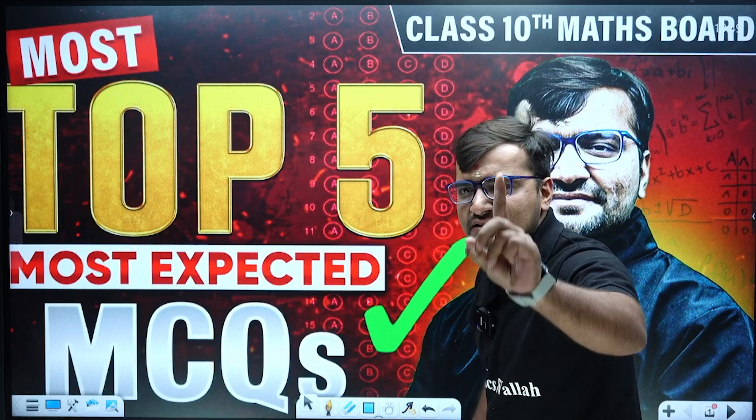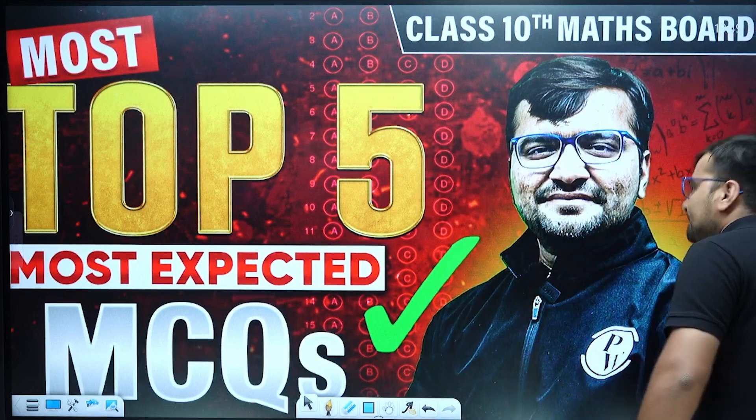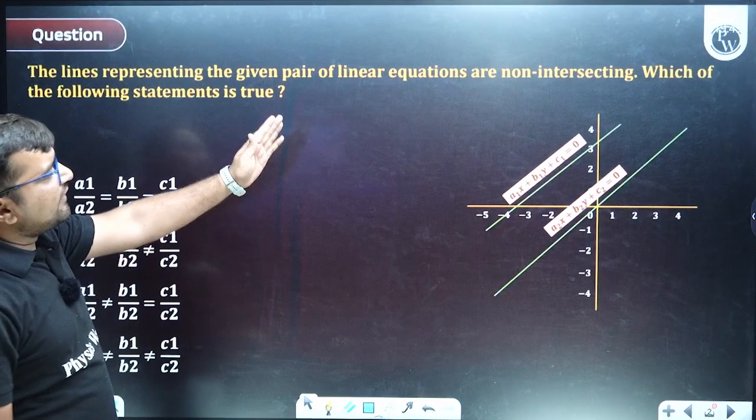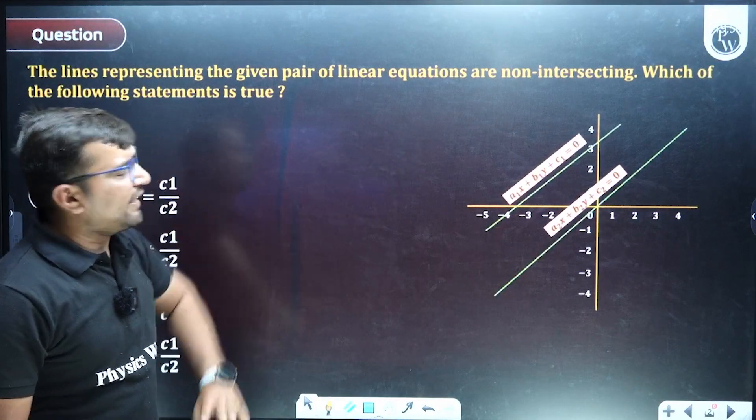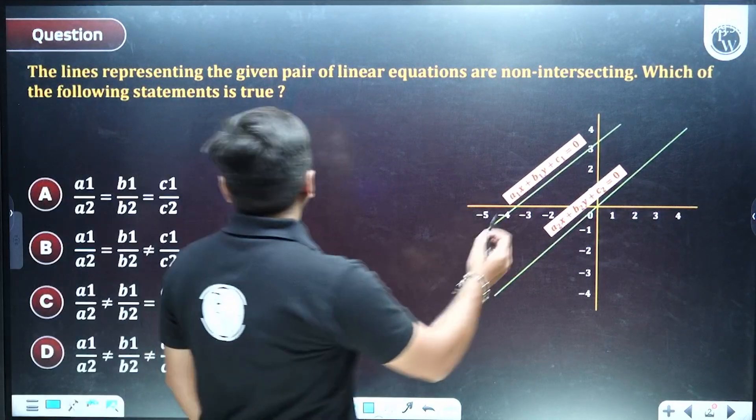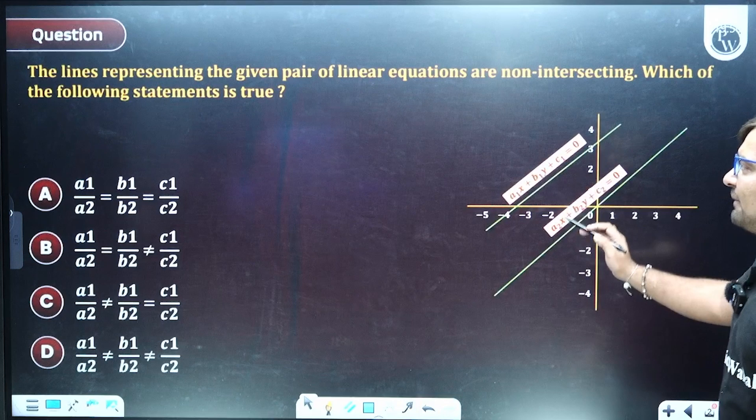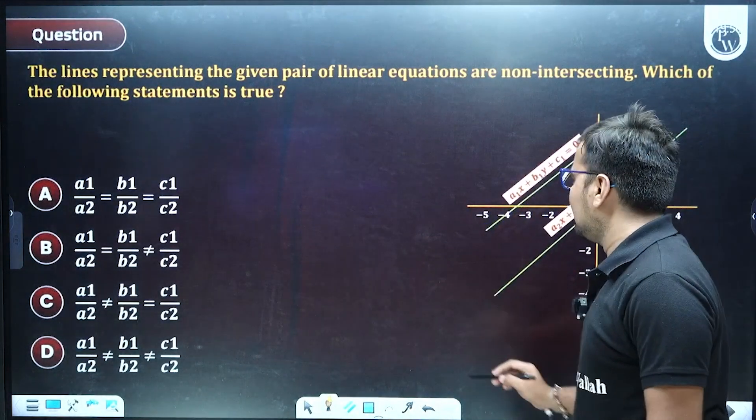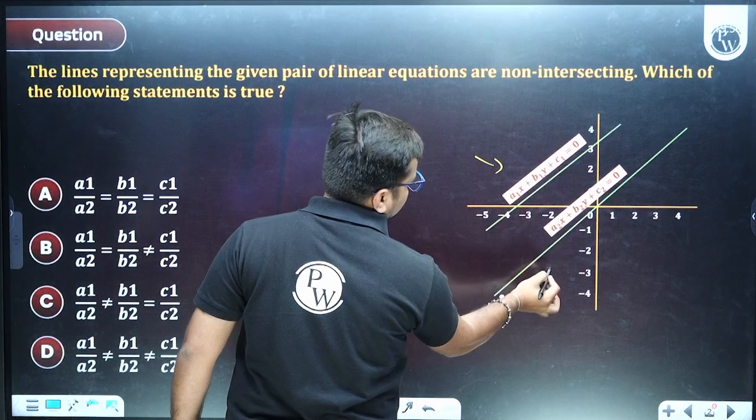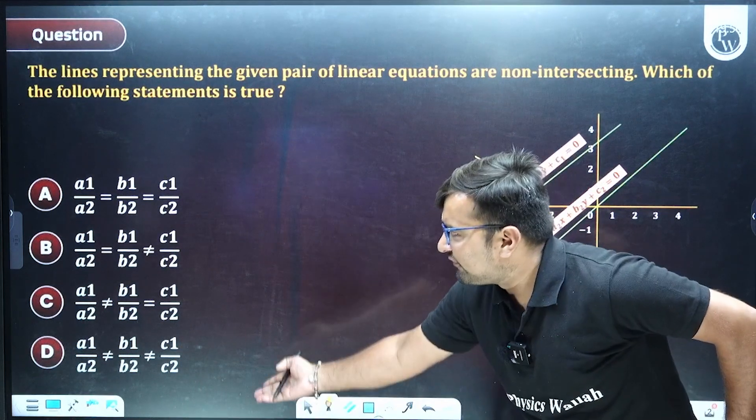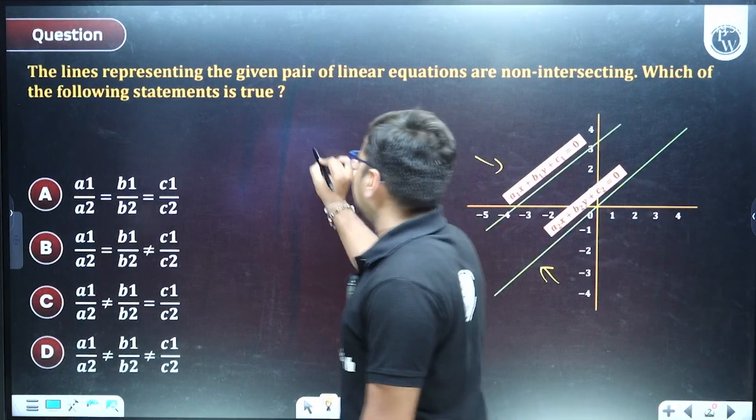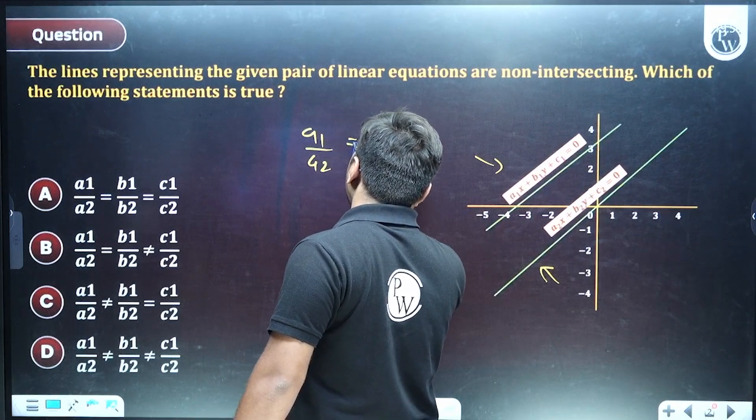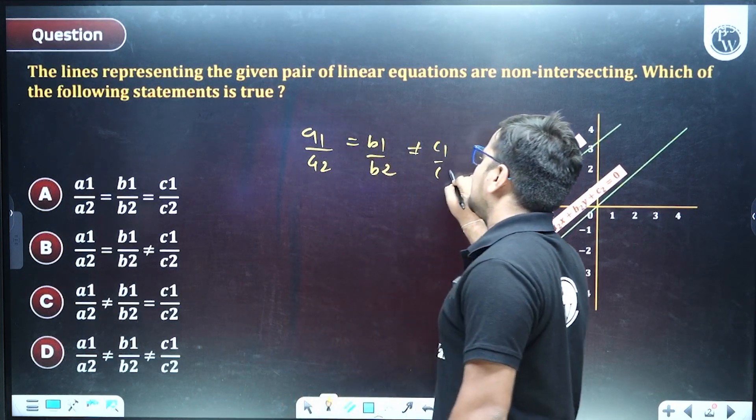See, the lines representing the given pair of linear equations are non-intersecting. Which of the following statement is true? It means two lines are parallel. Which of the following given condition is the right for this? a1/a2 equals b1/b2 but not equals to c1/c2.